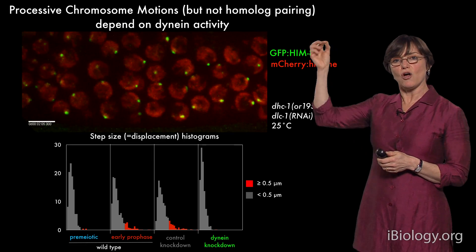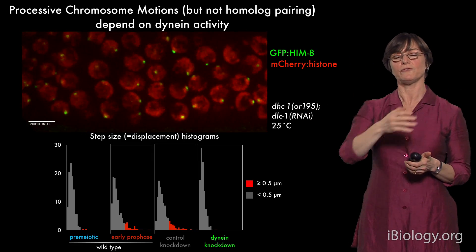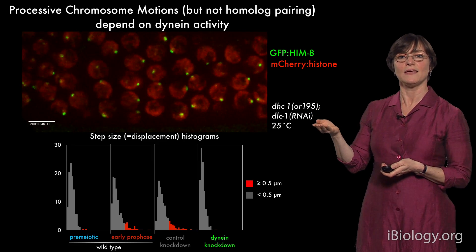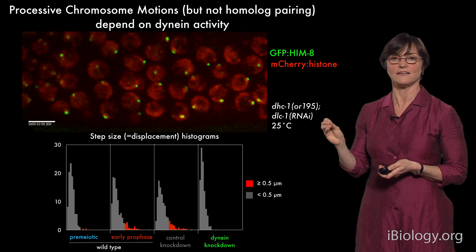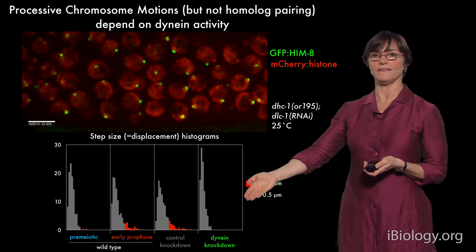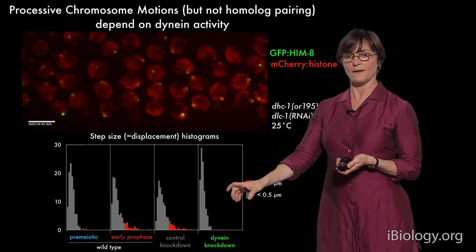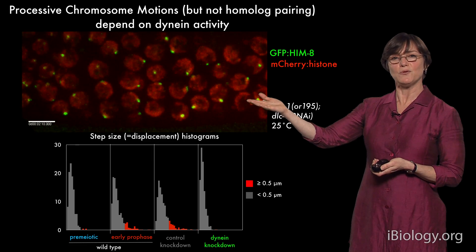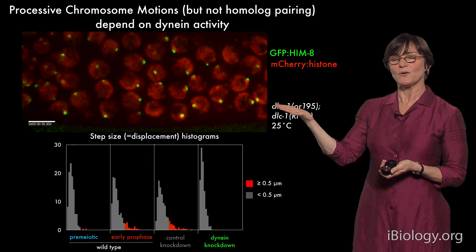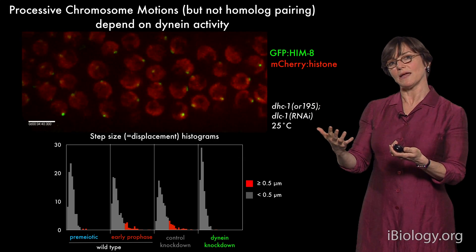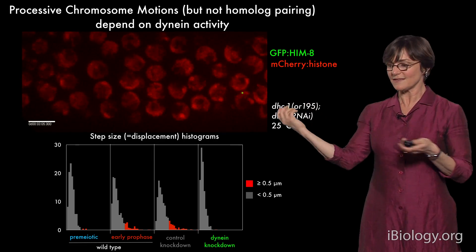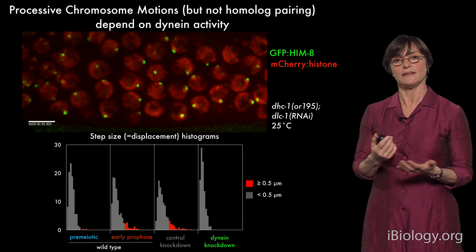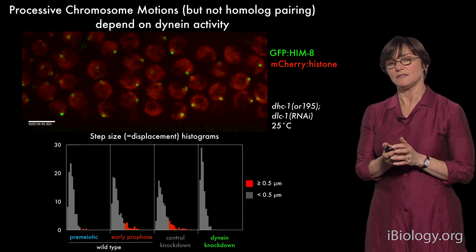We could tell that these long-range motions — which sometimes move chromosomes halfway across the nucleus around the periphery — depended on the microtubule motor dynein. We took a worm with a temperature-sensitive mutation in one dynein component and did RNAi against another dynein component to knock down activity as strongly as possible. The long-range motions disappear, as shown in the graph where apparent motions of more than about half a micron from one frame to the next disappear. Nevertheless, even though these motions are clearly upregulated during meiosis, they are actually dispensable for homolog pairing — we see only a slight delay in homolog pairing in the absence of dynein activity.